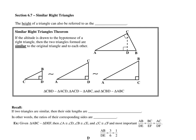Lesson 6.7, Similar Right Triangles. Now the height of a triangle can also be referred to as the altitude. Here we have the Similar Right Triangles Theorem.